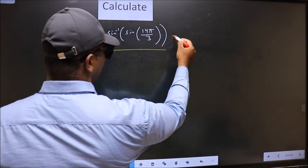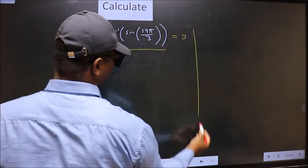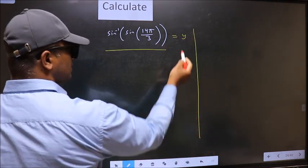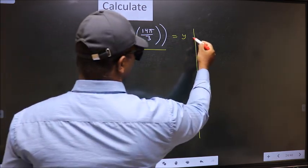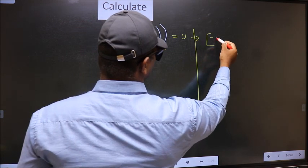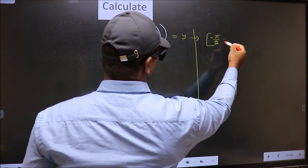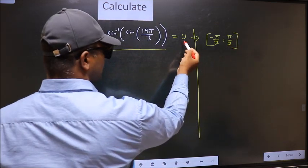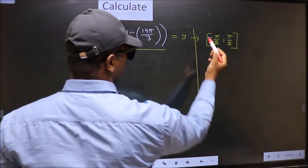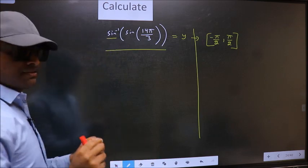Let us take the answer to be y. The condition is y should lie in the range of sin inverse which is minus π by 2 to plus π by 2. Our answer should lie in this interval. Clear with this point.